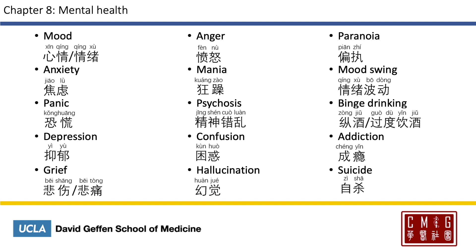Paranoia is 偏执. Mood swings are 情绪波动. Binge drinking is 酗酒 or 过度饮酒. Addiction is 成瘾, and suicide is 自杀.